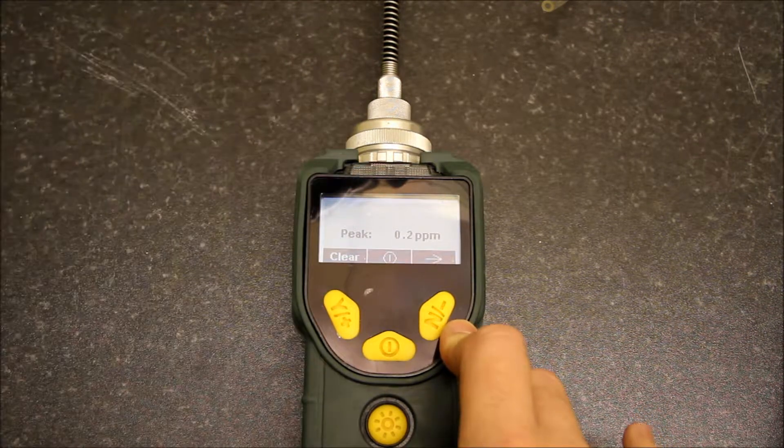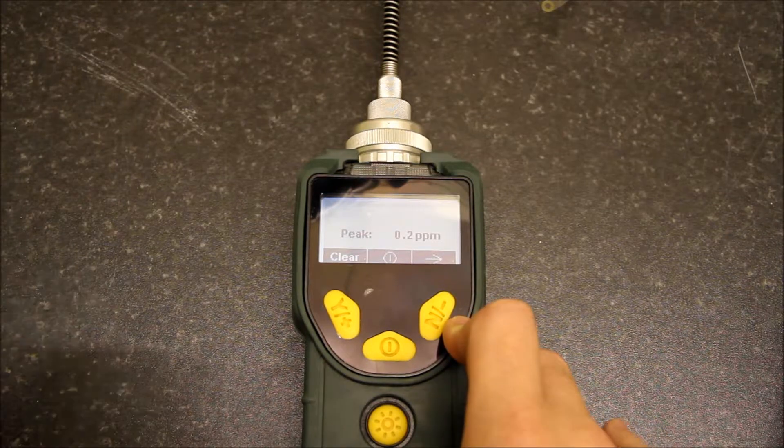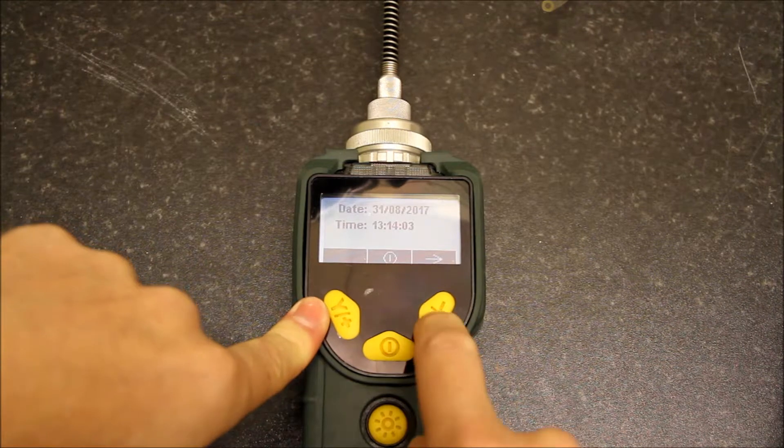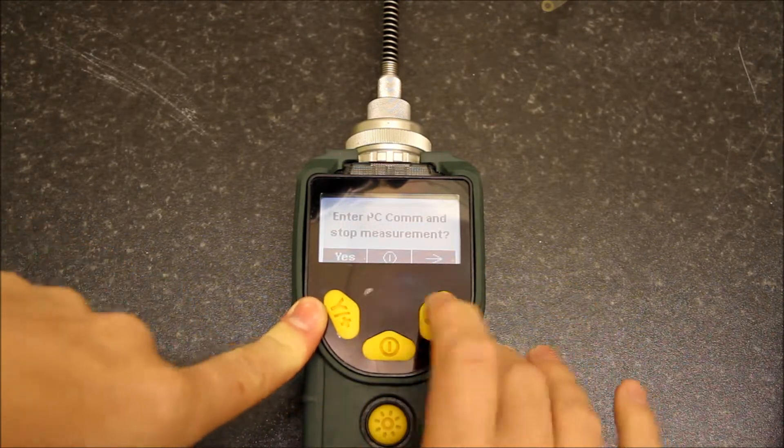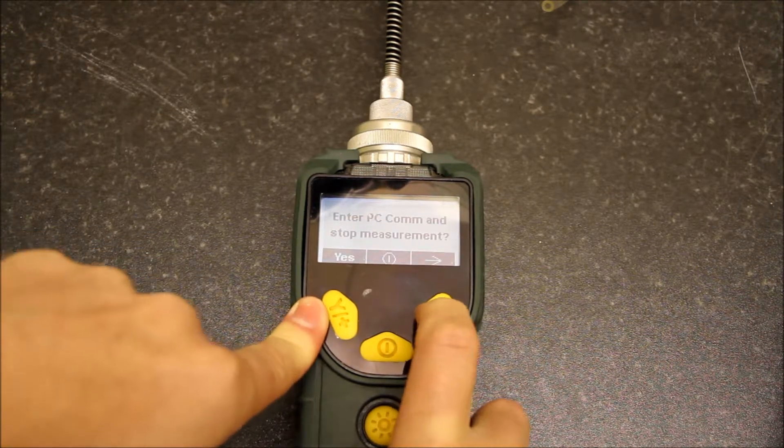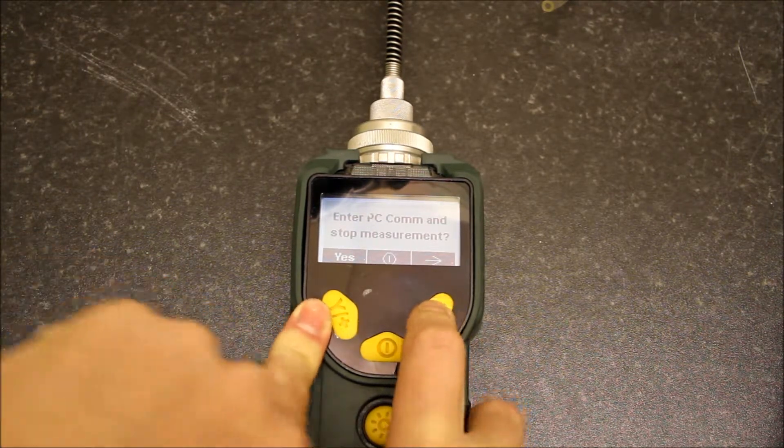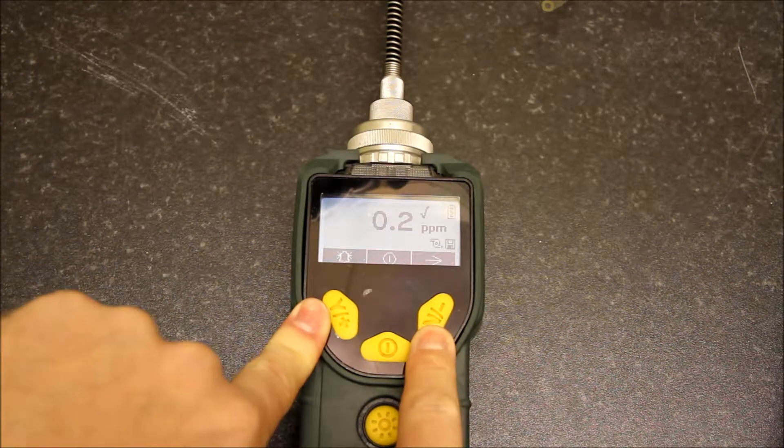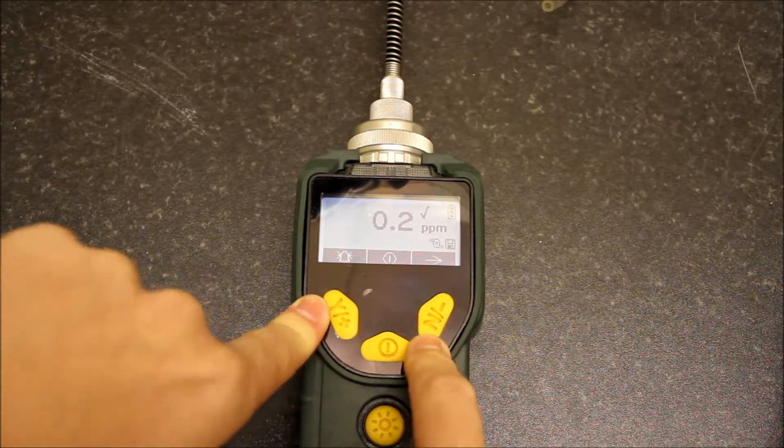As you can see, we've got ambient 0.2 conditions, so the peak value is still at 0.2. We've got date and time, and then we've got enter PC communications mode. That's not really necessary for this version of instrument as it's non data logging.